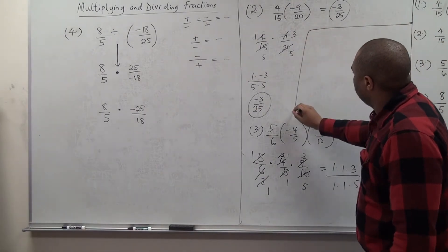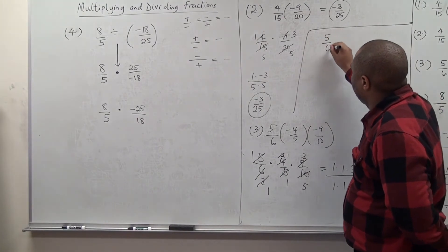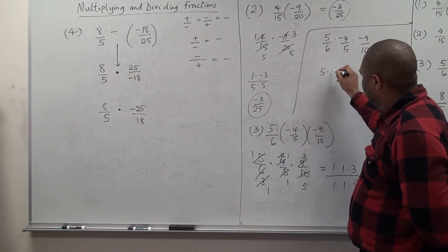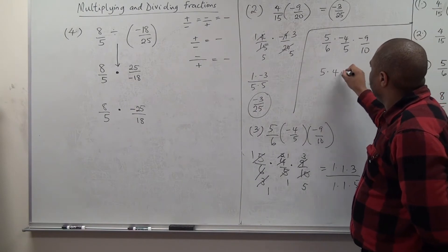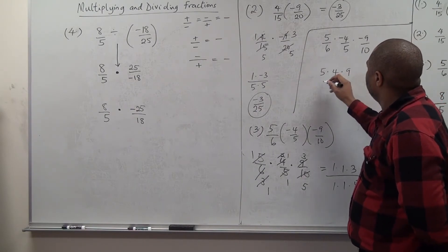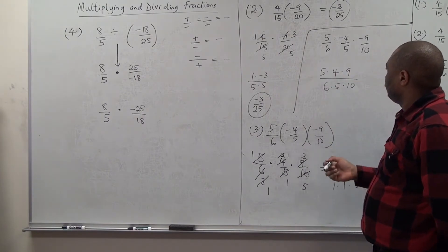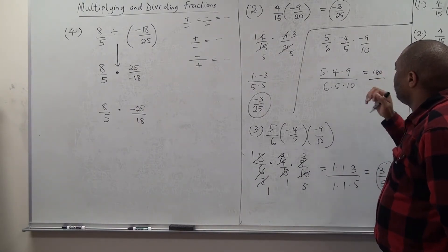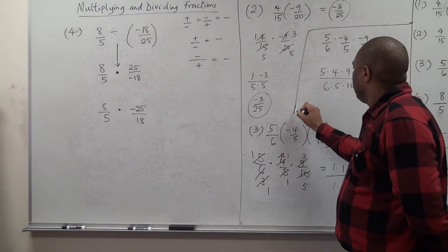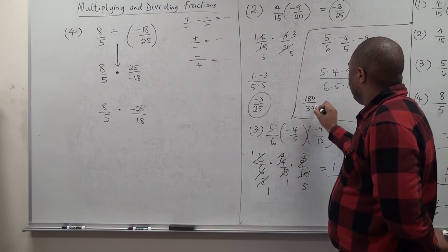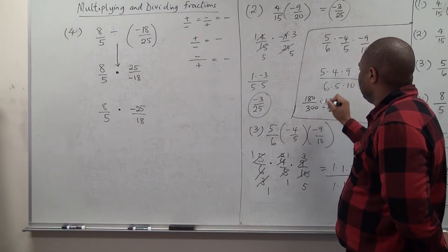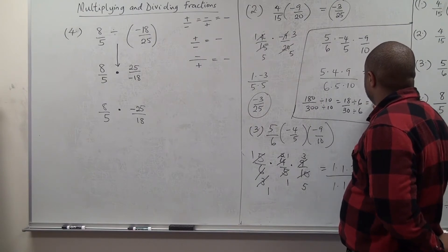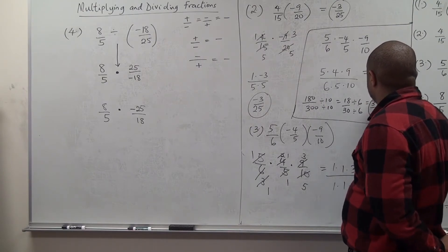You can also multiply then simplify. Negative times negative is positive, so: 5 times 4 times 9 over 6 times 5 times 10. That gives 5 times 4 is 20 times 9 equals 180, over 6 times 5 is 30 times 10 equals 300. So 180 over 300. Simplify by dividing by 10: 18 over 30. Then divide by 6: 3 over 5. The same answer.